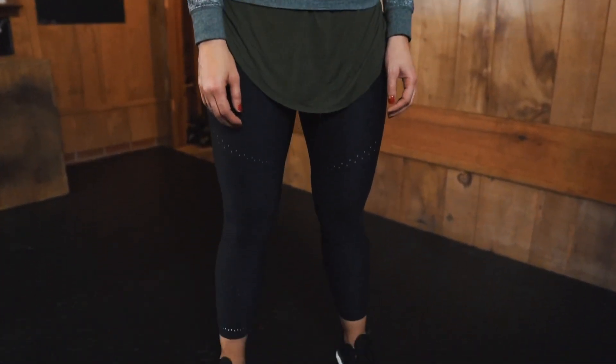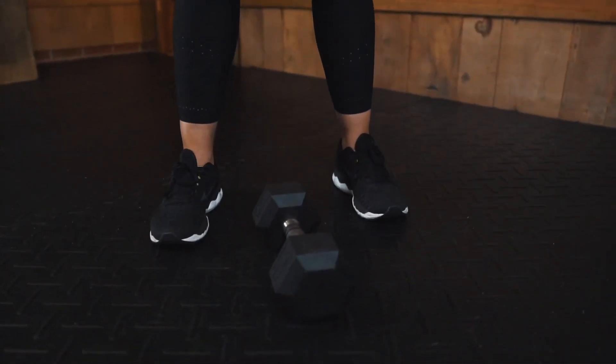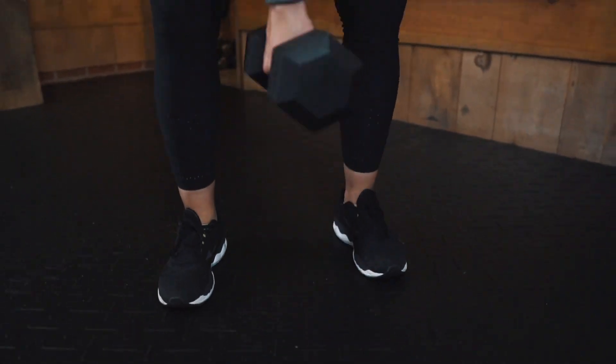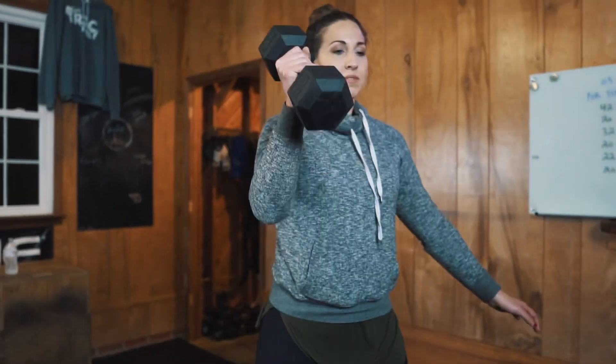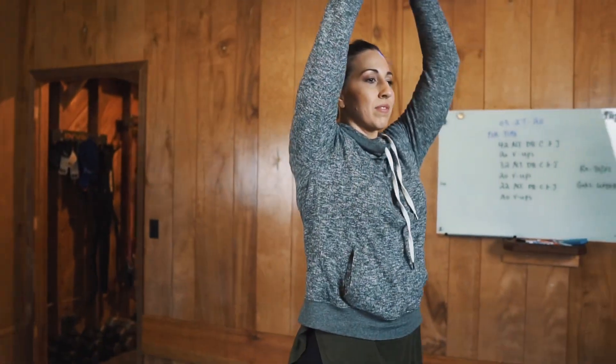Hey guys, for the clean and jerk, you're going to start the dumbbell between your legs. You're going to pick it up with one hand and for the clean, think of it more like a kettlebell swing to get up to your shoulder. So you're going to swing it up.